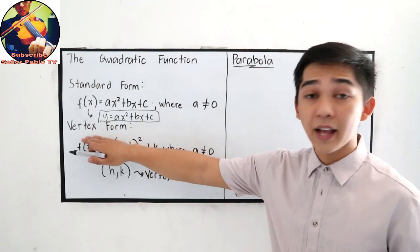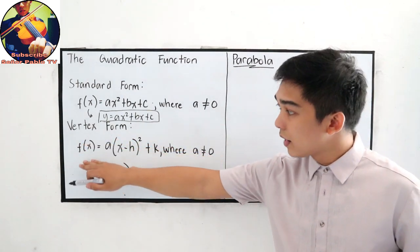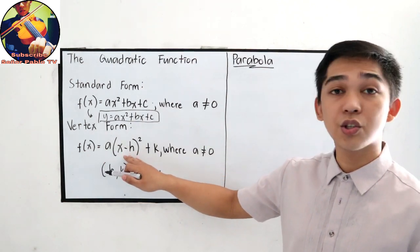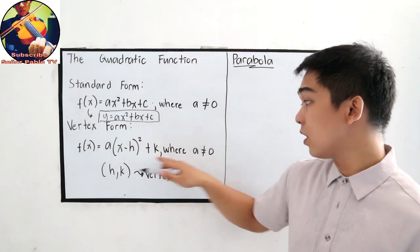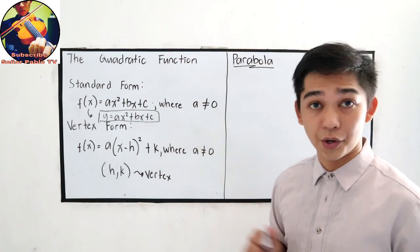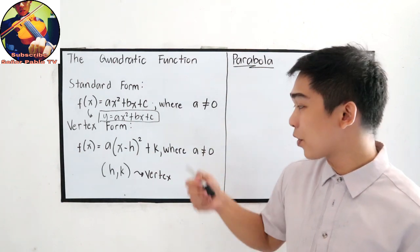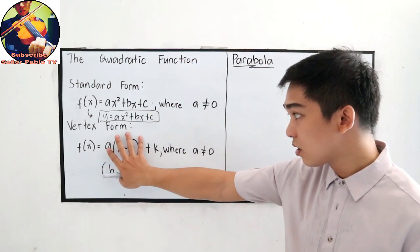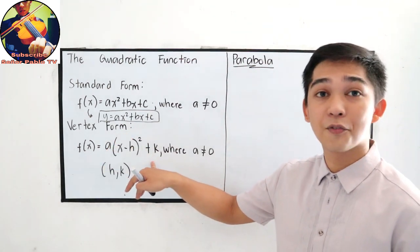And our vertex form is f(x) is equal to a quantity x minus h squared plus k, where a is not equal to 0. Again, our condition is a not equal to 0, because that will give you, in this case, a constant function.